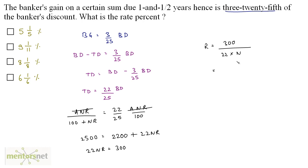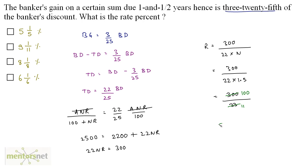N is 1.5 years, so R equals 300 divided by 22 times 1.5, which is 300 divided by 33. This simplifies to 100/11, which equals 9 and 1/11 percent. So the answer is option B: 9 1/11%.